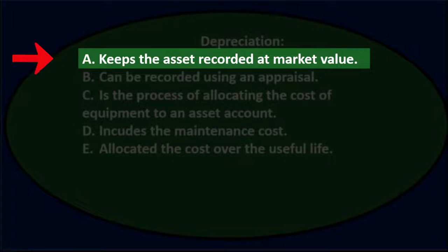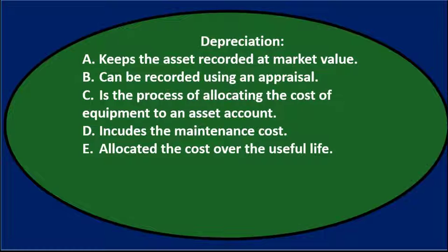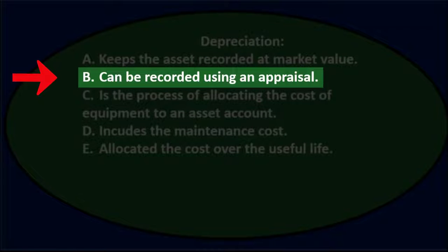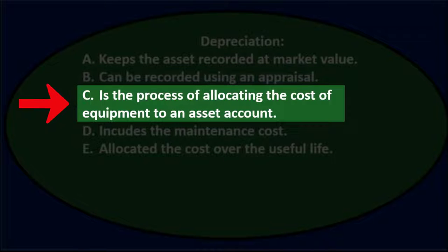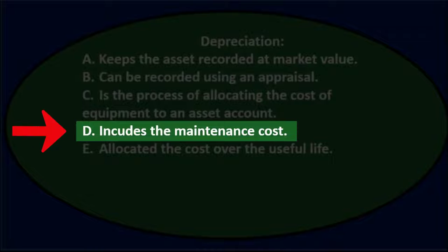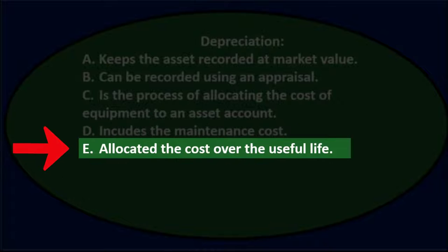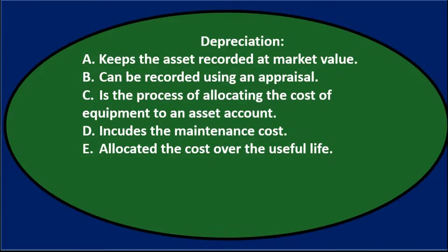Depreciation. A: Keeps the asset recorded at market value. B: Can be recorded using an appraisal. C: Is the process of allocating the cost of equipment to an asset account. D: Includes the maintenance cost. E: Allocates the cost over useful life.